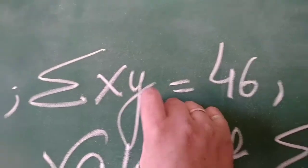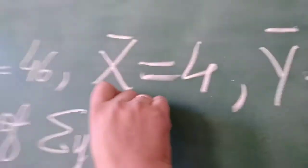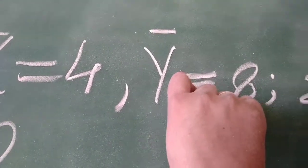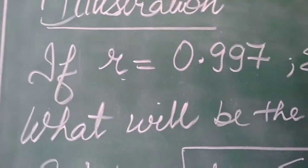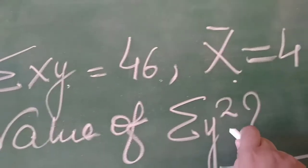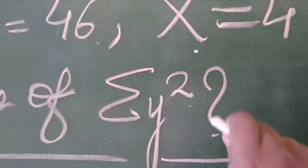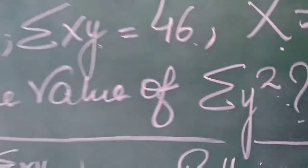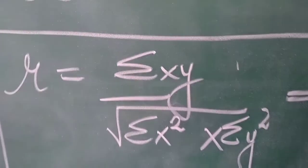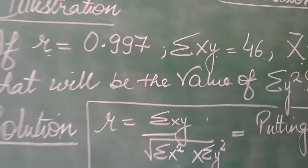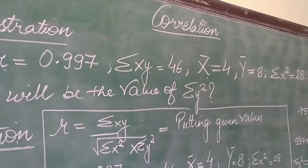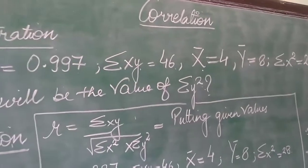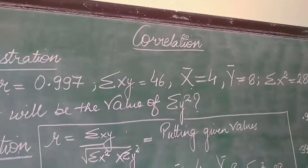We have the value of summation x square, and then what will be the value of summation y square? That is the missing value. x square is given and y square is not given. So the formula will be used. We have all the values given, I am showing it to you.